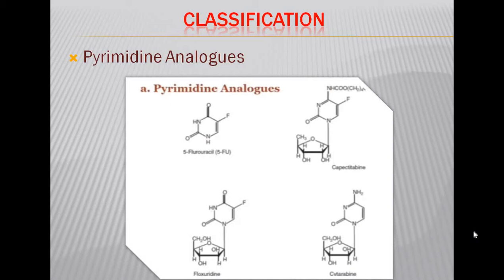The first and most important drug in this category is 5-fluorouracil, which is an analogue of thymine with a fluorine group at the fifth position. This drug produces two active metabolites: 5-fluorodeoxyuridine monophosphate and 5-fluorodeoxyuridine triphosphate. The first metabolite inhibits the enzyme thymidylate synthase, which prevents the synthesis of thymidine — a major building block of DNA.